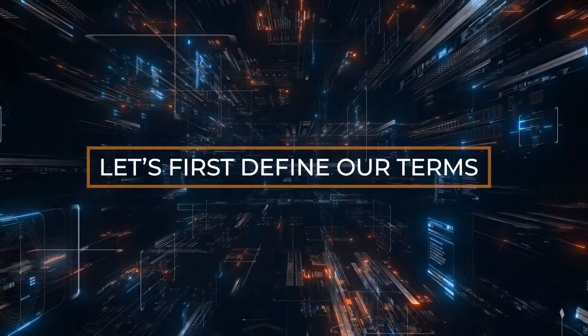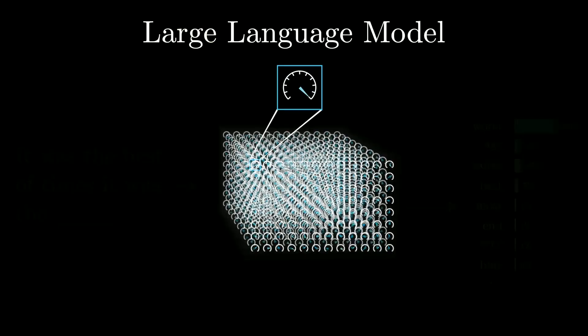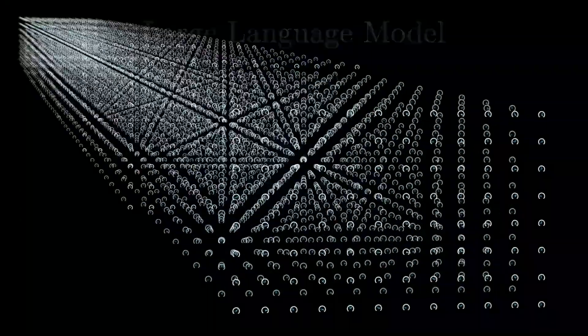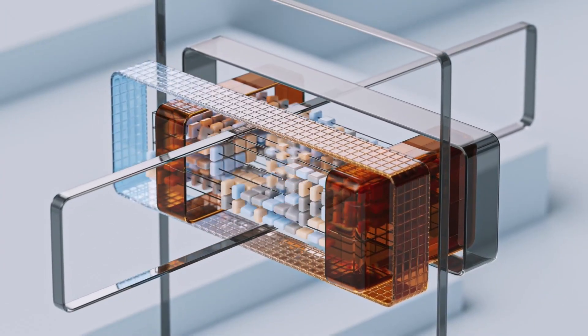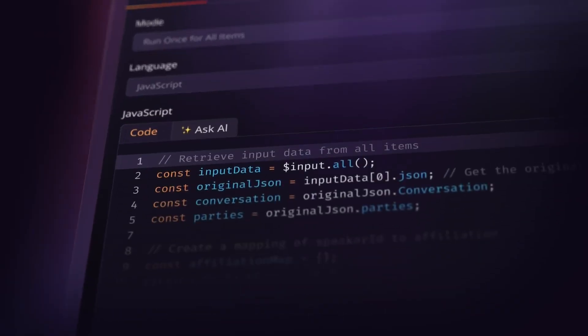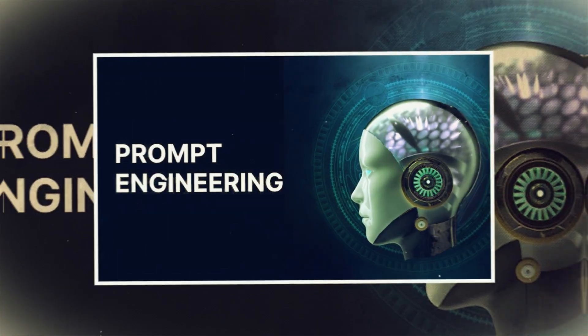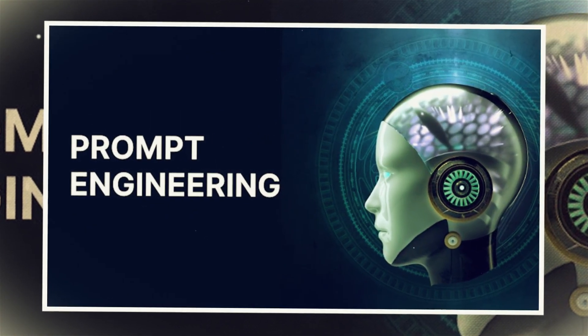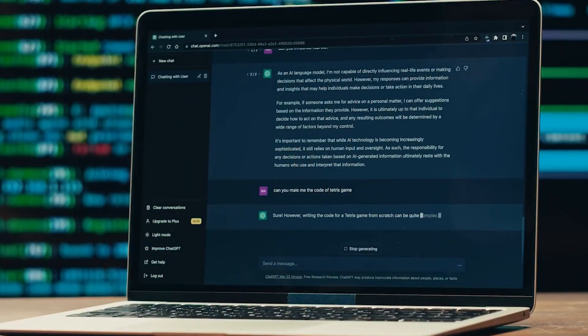Let's first define our terms. Context engineering is designing and building dynamic systems that give a large language model — an LLM — the right information in the right format at the right time to accomplish a task. In other words, you're not just giving it a single instruction. You're meticulously crafting the entire input area, the context window, to set the model up for success. Prompt engineering, on the other hand, is all about what you say to the model at a specific moment. It's focused on crafting one-shot instructions and is useful for creative or one-off tasks.